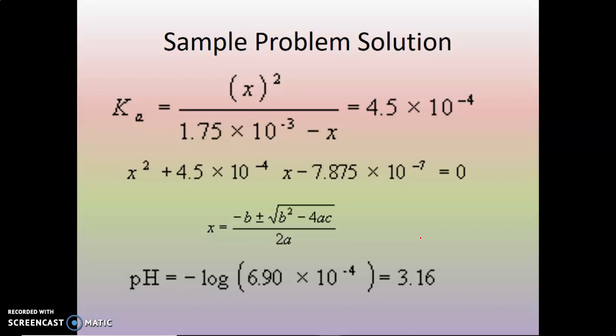Here we are back with acid-base equilibrium part 2. We just finished our pH calculation of a weak acid, where you had the concentration of your weak acid as 1.75 times 10 to the minus third molar, and that led you to a pH of 3.16.